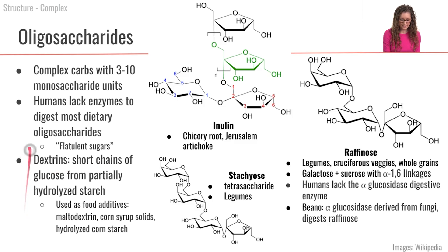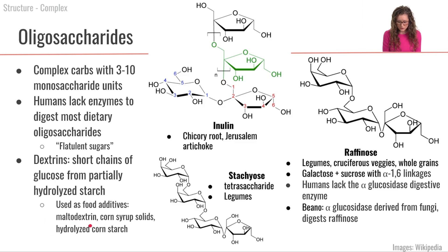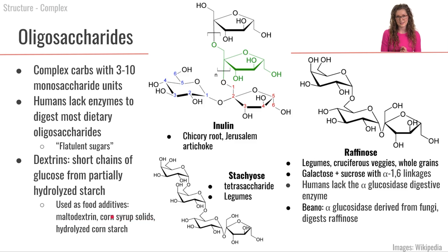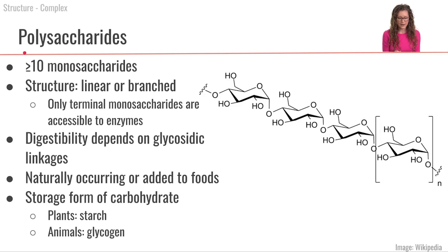In food production, dextrins are used as a food additive. If you look at an ingredients list and see things like maltodextrin, corn syrup solids, or hydrolyzed cornstarch, those are all examples of dextrins.